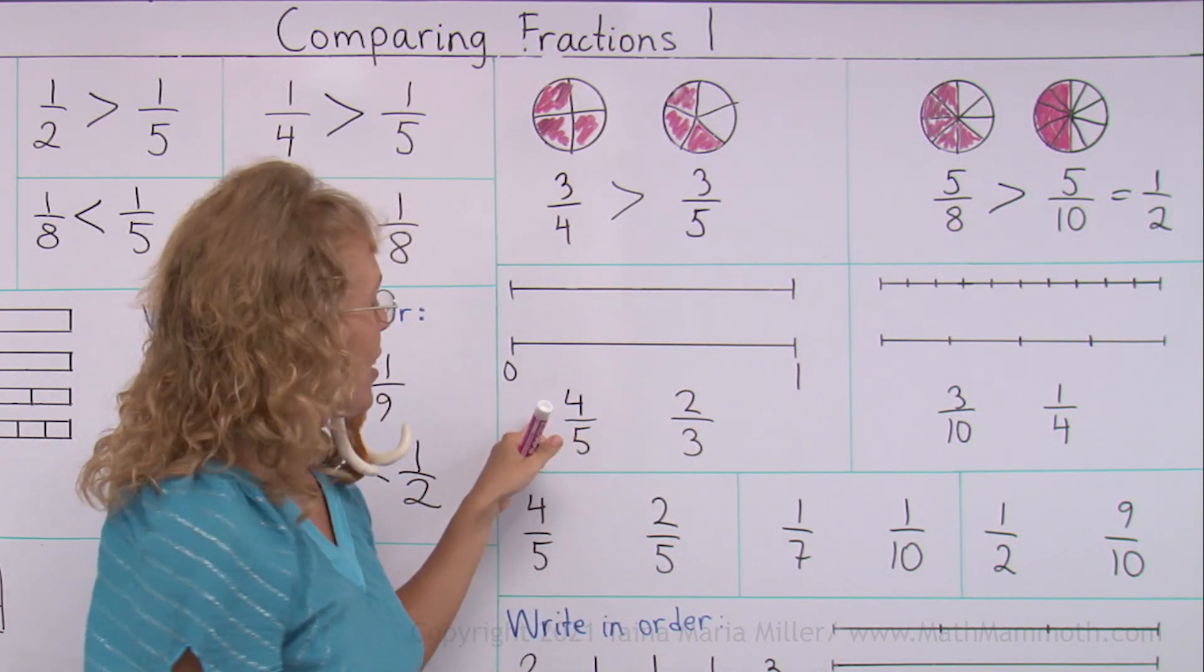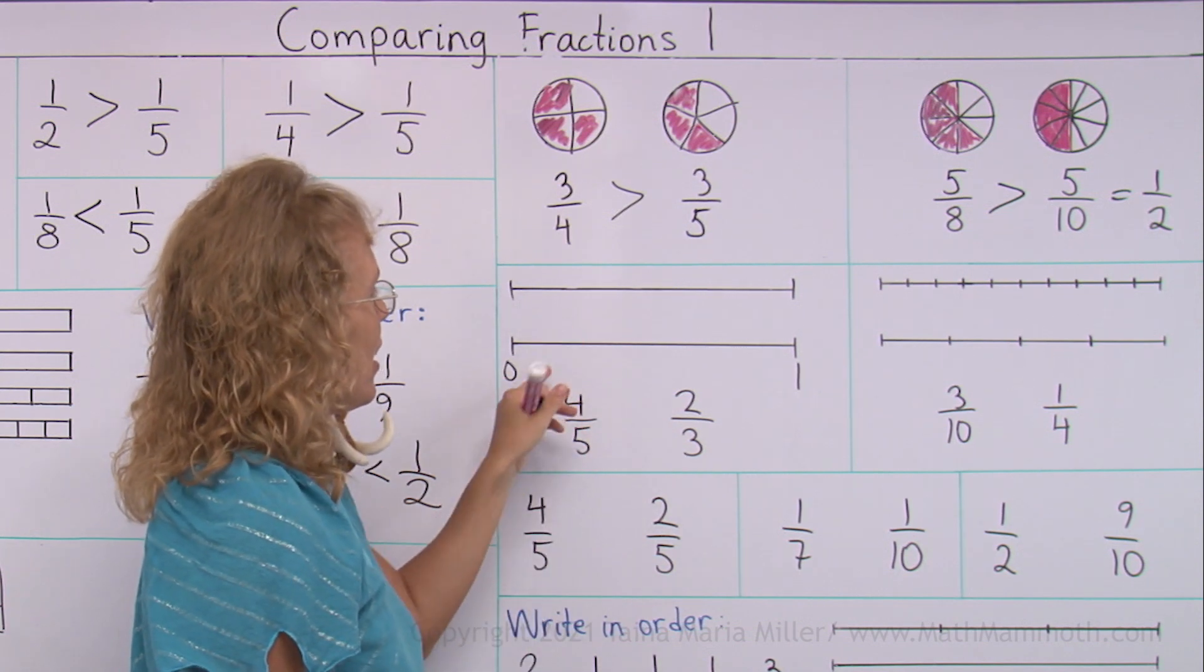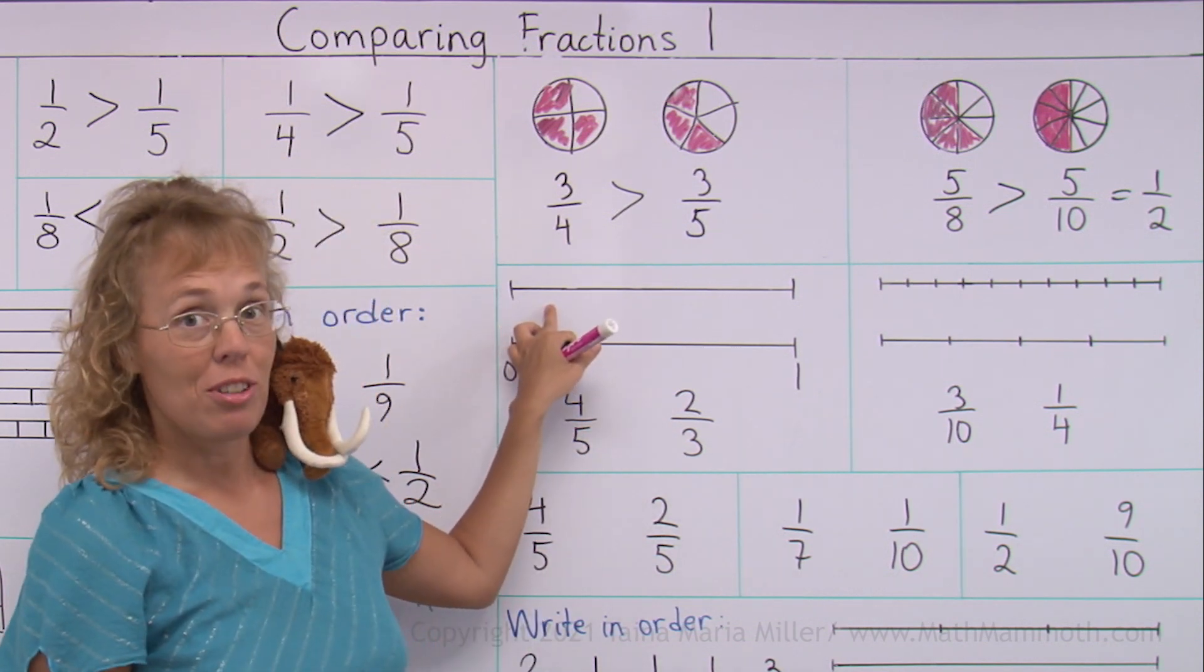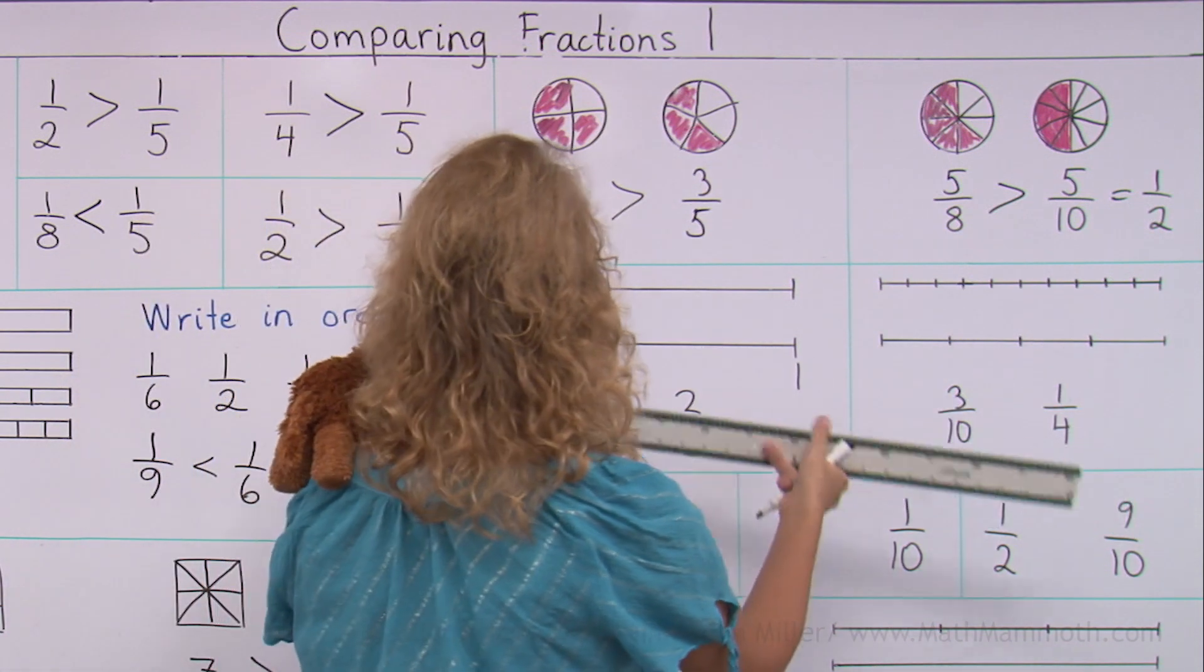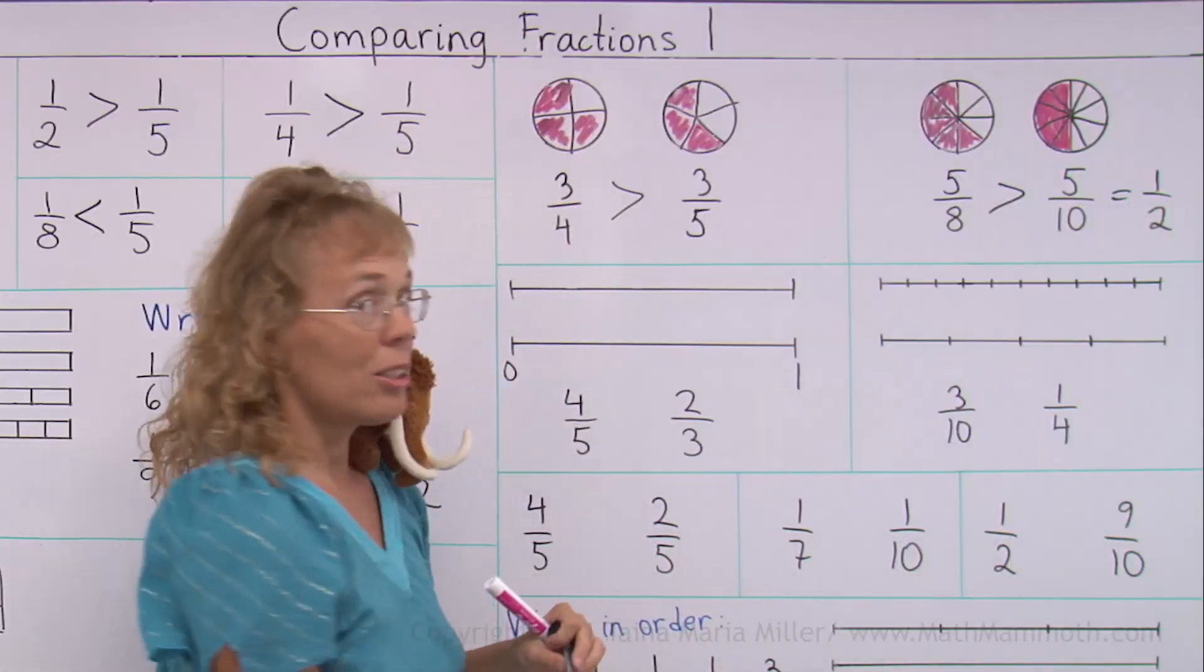So we can use number lines here to check which fraction will be more. And I'm gonna divide this number line into five parts. I'm gonna use my ruler to measure it first. Let's see. Okay, it is 35 centimeters long.